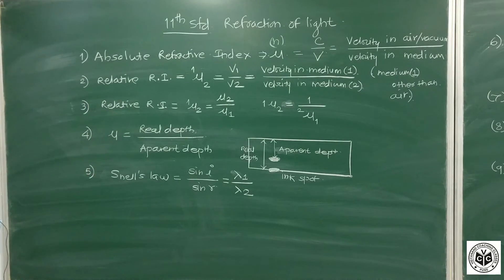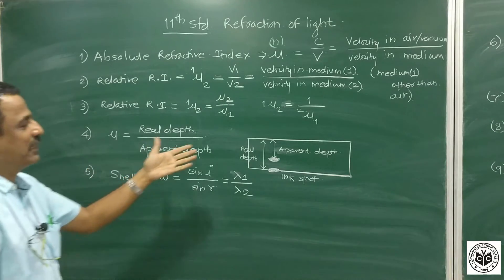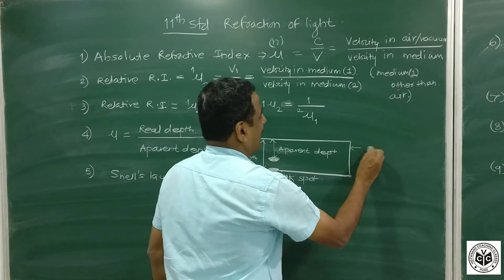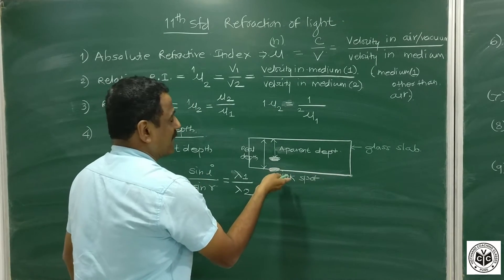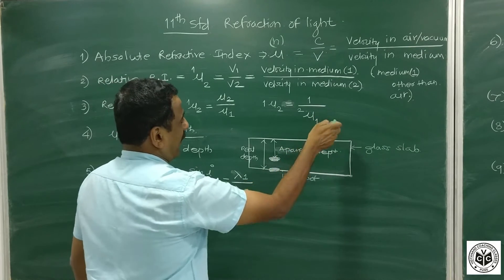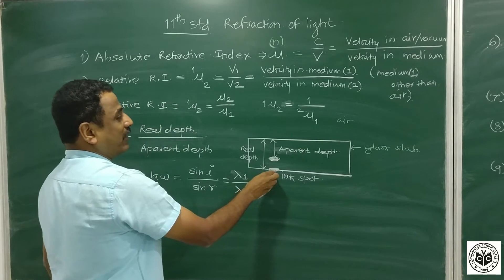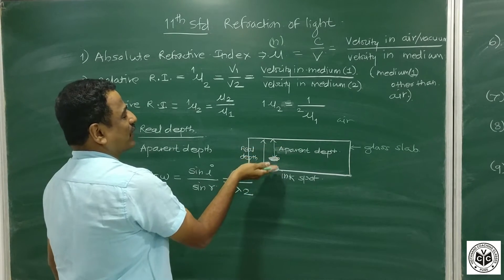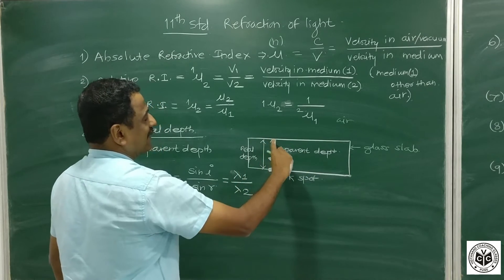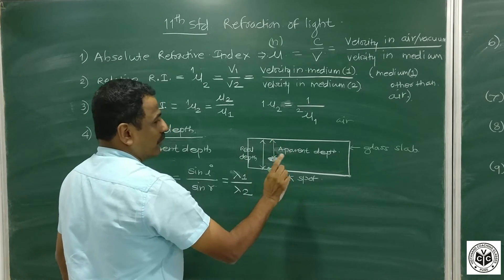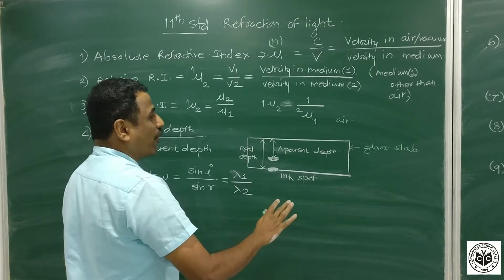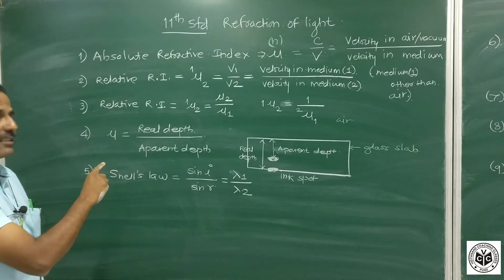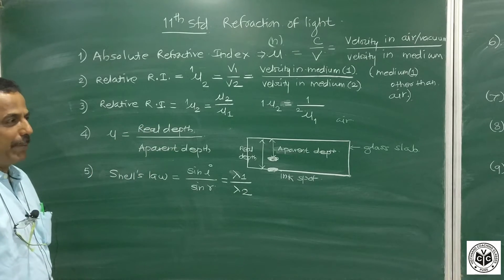The next point is mu in terms of real depth and apparent depth. Suppose we have a glass slab placed on some written material — say an ink spot. When you look from the air through this glass at the ink spot, the ink spot appears raised to a certain height. That raised position is the apparent depth; the actual position is the real depth. Without going into the full derivation, the formula is: refractive index equals real depth upon apparent depth.